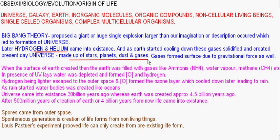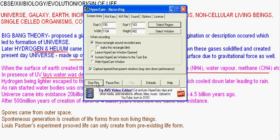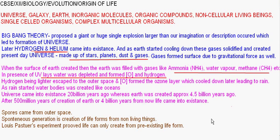When earth came into existence, it was filled with gases like ammonia, water vapor, methane, etc., which were all inorganic in nature. No organic compounds were created in the first stage. In the presence of UV rays, the water vapor was depleted and formed molecular oxygen as well as hydrogen. Hydrogen, being lighter, escaped into outer space. Then the molecular oxygen formed the ozone layer, which later cooled down and led to raining.